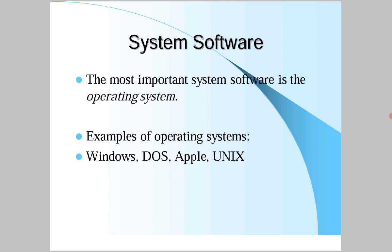The most important system software is the operating system. Examples of operating systems are Windows, DOS, Apple, and UNIX. System software is developed purely for system use. It may also contain some tools and utilities like Acrobat Reader, WinRAR, and WinZip.